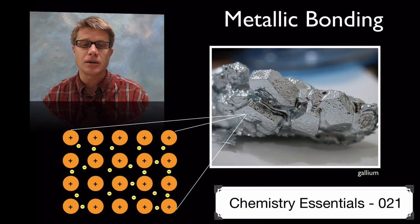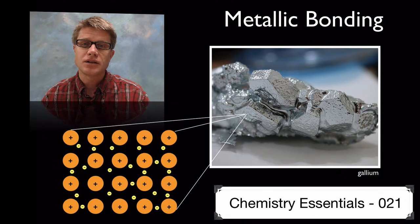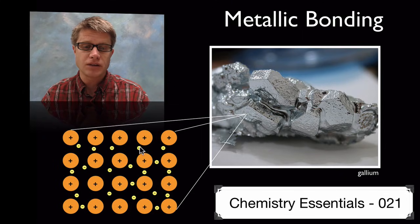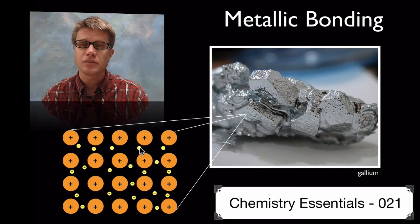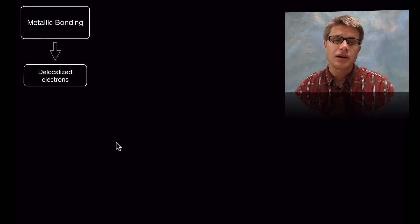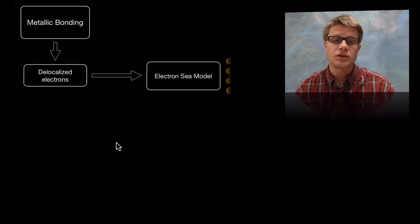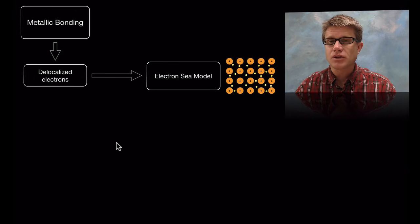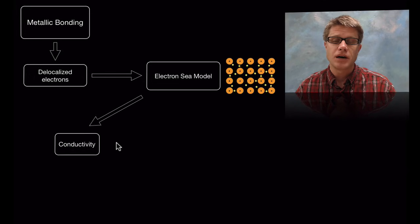And so the way we look at metallic bonding is the electron sea model. Where you have all of these electrons and they're shared by all the atoms. It creates a sea of electrons and then the protons are kind of held on the inside of that. And so in metallic bonding what we have are delocalized electrons, or electrons that have a freedom to move. And the way we visualize that is through this electron sea model.